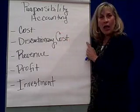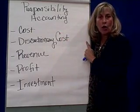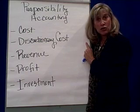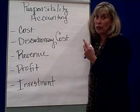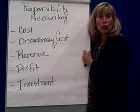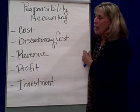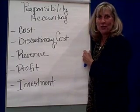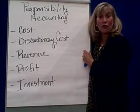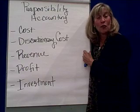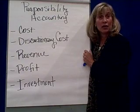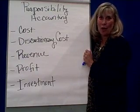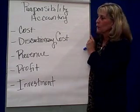In the next chapter, we're going to spend a lot of time on cost centers using a performance evaluation measurement system known as standard costing. We'll be able to break down materials, labor, variable overhead, and fixed overhead into a lot of different variances — eight variances in all. So that's next chapter.